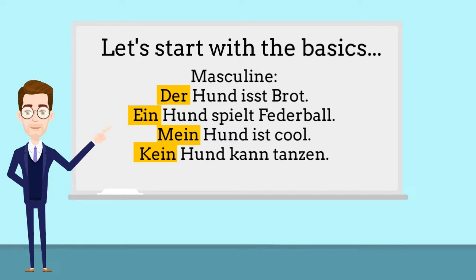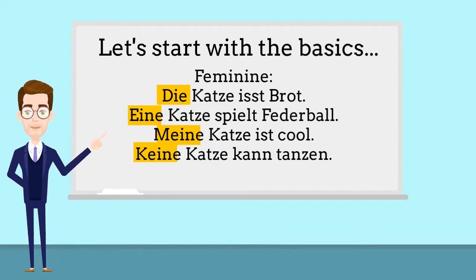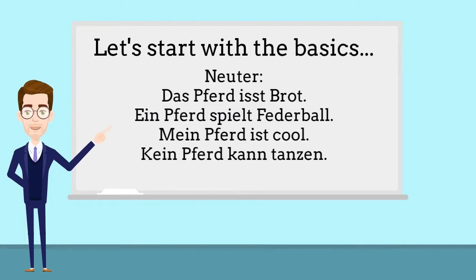For example: the cat eats bread; a cat doesn't play; my cat doesn't play. And for neuter: das Fährt ist rot; ein Fährt spielt Viererball; mein Fährt ist cool; kein Fährt kann tanzen. So far so good!